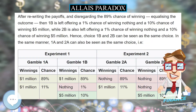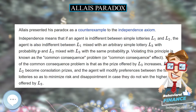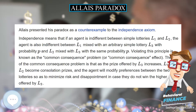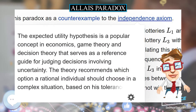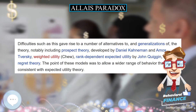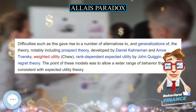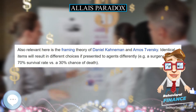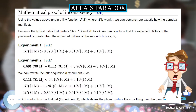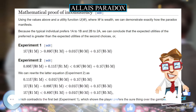In each experiment the two gambles give the same outcome 89% of the time. Starting from the top row and moving down, both 1A and 1B give an outcome of $1 million with 89% probability, and both 2A and 2B give an outcome of nothing with 89% probability. If this 89% common consequence is disregarded, then in each experiment the choice between gambles will be the same: an 11% chance of $1 million versus a 10% chance of $5 million.